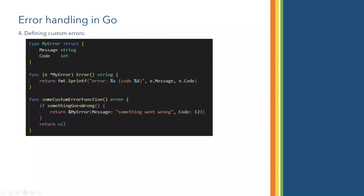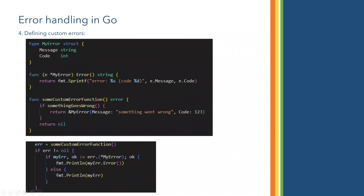The fourth type is defining custom errors. You can define your own errors — for example, a myErrorStruct which has a message and a code. You can format an error method from this myErrorStruct, formatting the error message and error code so it can be handled wherever required. If something goes wrong in a custom error function, you return an object of myError with a custom message.